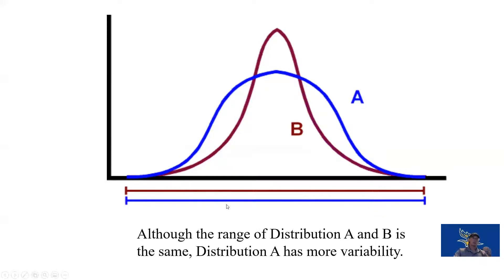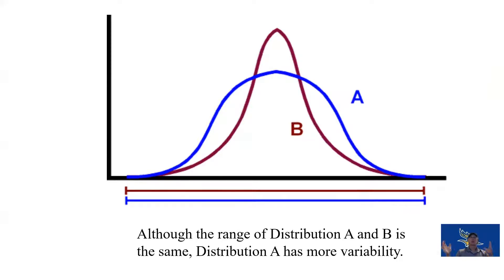These two curves, A and B, have the same range and the same mean, but their shapes differ. B is more leptokurtic and A is more mesokurtic, meaning more of B's scores are clustered around the mean. Although the range is the same, the distribution is different — group A has more variability because more scores are spread out relative to the mean.